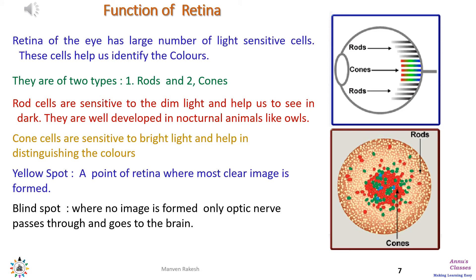After the lens, the most important component of the eye is the retina, which is at the back of the eye. The retina has many light-sensitive cells of two types: rods and cones. Rod cells are sensitive to dim light and help us to see in the dark. Cone cells are sensitive to bright light and help us in distinguishing colors — so we see colors mainly because of the presence of cone cells. Rod cells are more developed in nocturnal animals like owls and cats.